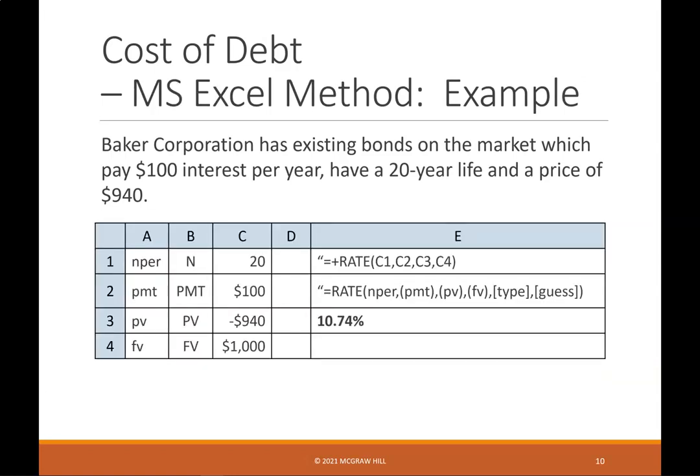Cost of debt — MS Excel method example: Baker Corporation has existing bonds on the market which pay $100 interest per year, have a 20-year life, and a price of $940. You can use the formula function in Excel, using financial formulas to find the rate.